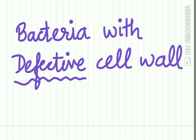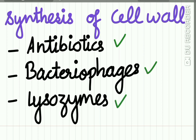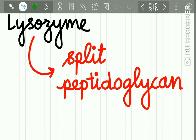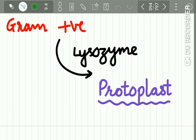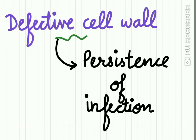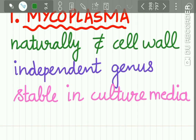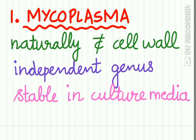Now let us study the various forms of bacteria with defective cell walls. The synthesis of the cell wall may be inhibited by antibiotics, bacteriophages, or lysozyme. Lysozyme is an enzyme present in many tissues that lyses bacteria by splitting the peptidoglycan in the cell wall. When gram-positive organisms are treated with lysozyme they form a protoplast, while gram-negative organisms treated with lysozyme form a spheroplast. These defective cell wall bacteria are responsible for persistence of infection. There are four types of bacteria without cell walls. The first is mycoplasma — a naturally occurring bacterium without a cell wall, classified as an independent genus and very stable in culture media.